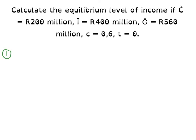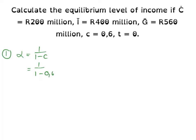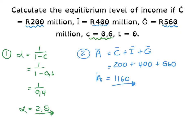Step one: calculate the multiplier. Alpha is equal to 1 divided by 1 minus c, so alpha equals 1 divided by 1 minus 0.6, giving us a final value of 2.5. Step two: calculate autonomous spending. A-cap is equal to C-cap plus I-cap plus G-cap, which is 200 million plus 400 million plus 560 million, giving us a final answer of 1,160 million.